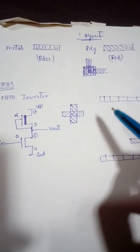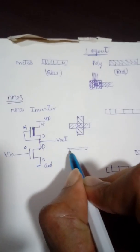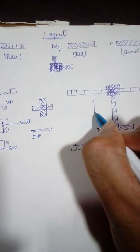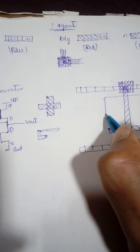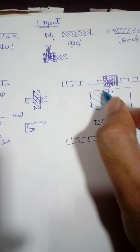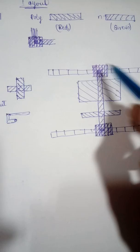Next, to make the pull-up transistor, refer back to the stick diagram approach. Instead of drawing separate connections as in the stick diagram, you can directly draw a larger polysilicon region, which implies that the gate and drain terminals are shorted together. So you don't have to draw the connection explicitly — just extend the polysilicon representation. This completes the construction of the pull-up transistor.